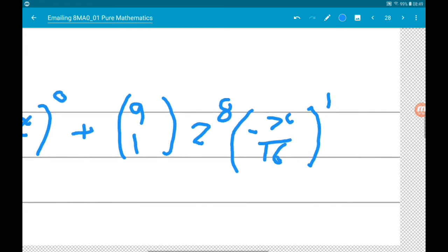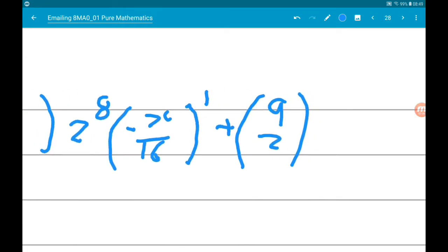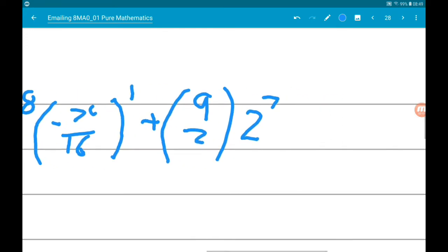And then the third term is 9 to the power of 2, times 2 to the power of 7, times minus x over 16 squared.